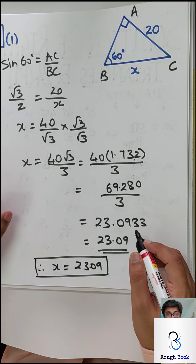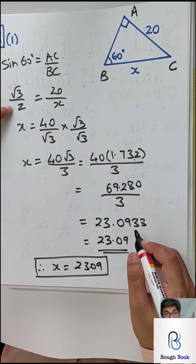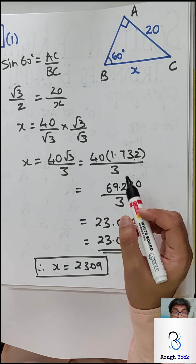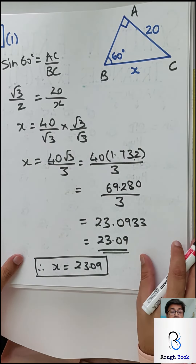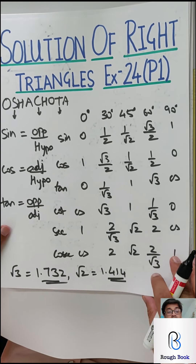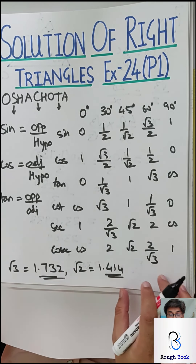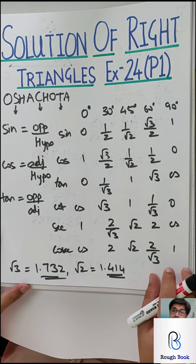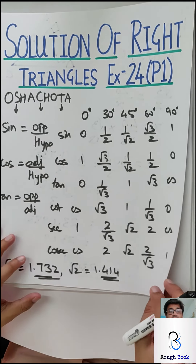If you carefully focus on this sum, you will realize you are using sine — opposite upon hypotenuse — osha chota. You are using the standard value of sine 60 as root 3 by 2. And third, you need to know the value of root 3 as 1.732, plus the rationalizing. Each sum in this chapter requires three things: number one, osha chota; number two, standard values; number three, values of root 3 and root 2. If you've taken this lightly, please right now memorize or take a screenshot and put it on your screen.